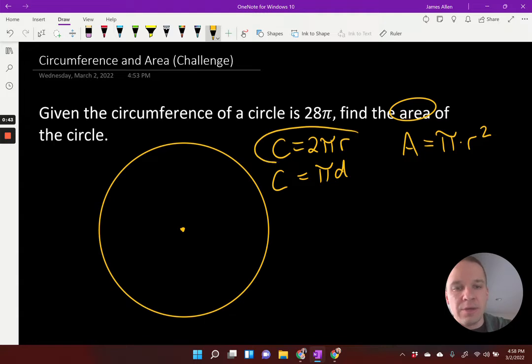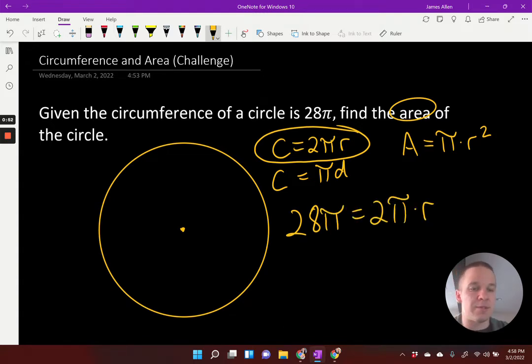Okay, so I'm going to be using this formula right here. So let's take our 28π and set that equal to the 2π times the radius. Cool? Now, I'm going to solve for r so I can use that in my area formula of a circle.